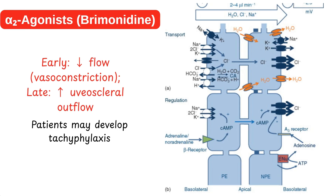The third class are the alpha-2 agonists like brimonidine. They mildly reduce production via vasoconstriction early on, but primarily act by increasing outflow. Patients can also develop tachyphylaxis with these.